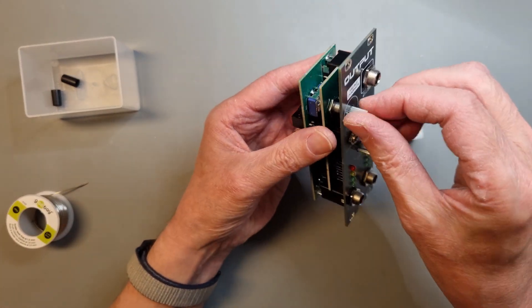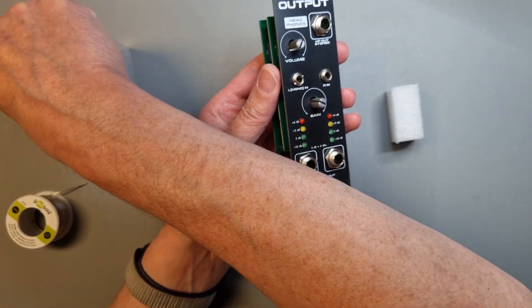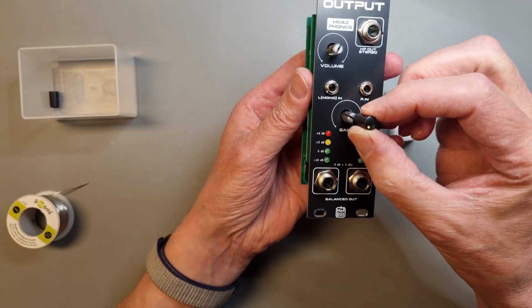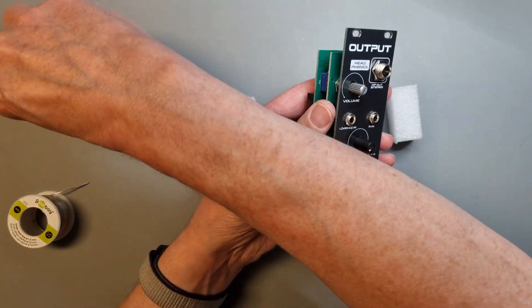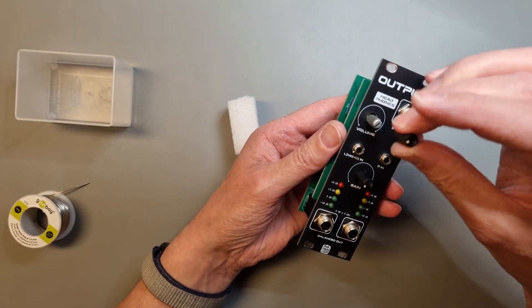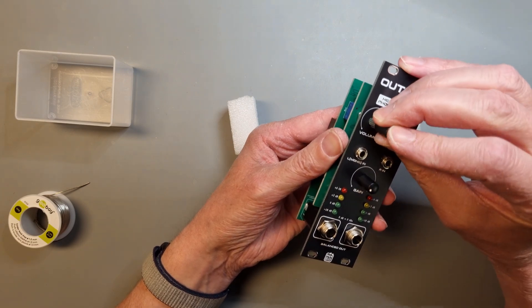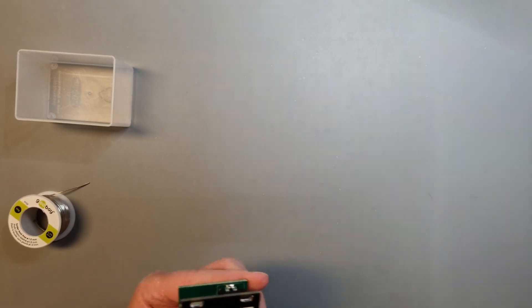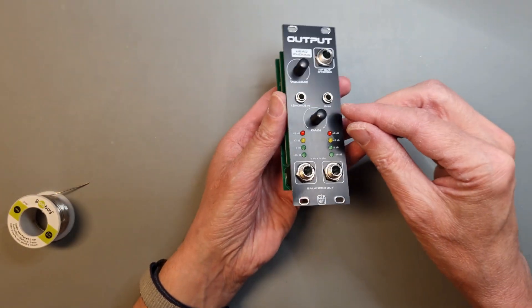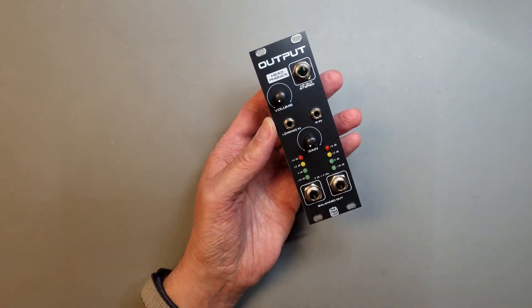Check that the shafts of the pots are free to move and attach the plastic knobs. And with that the build is completed.